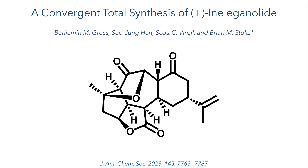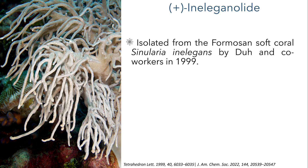This work was published by the Stoltz Group in JACS in their paper 'A Convergent Total Synthesis of Ineleganolide.' This compound was first isolated in 1999 by Dew and co-workers from the Formosan soft coral Sinularia inelegans. Initial studies show that it has activity against leukaemia, but comprehensive studies of its bioactivity have yet to be carried out.